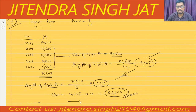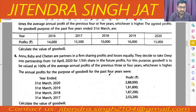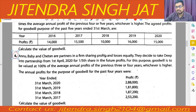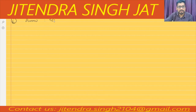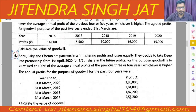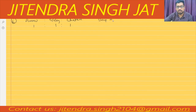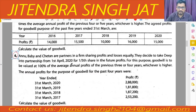Question number 6: Anu, Baby, and Chetan are partners sharing profit and loss equally. They decide to take Deep into partnership for one-fifth share. For this purpose, goodwill is to be valued at hundred percent of the average annual profits of the previous three or four years, whichever is higher.